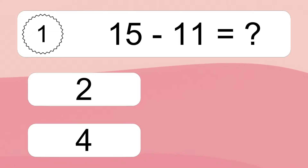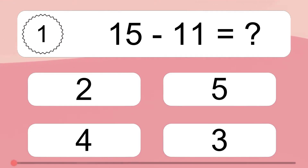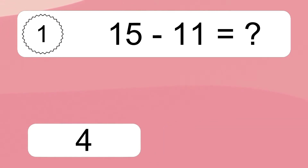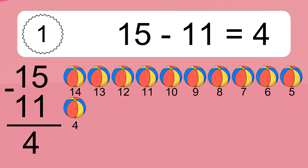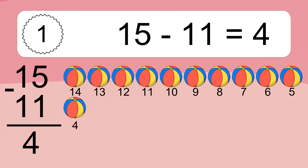15 minus 11 equals what? 15 minus 11 equals 4. Let's count it: 14, 13, 12, 11, 10, 9, 8, 7, 6, 5, 4.